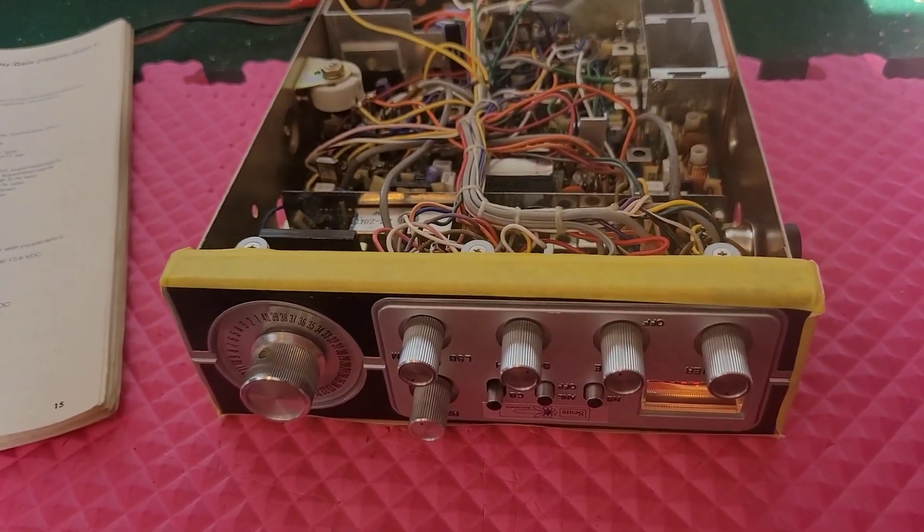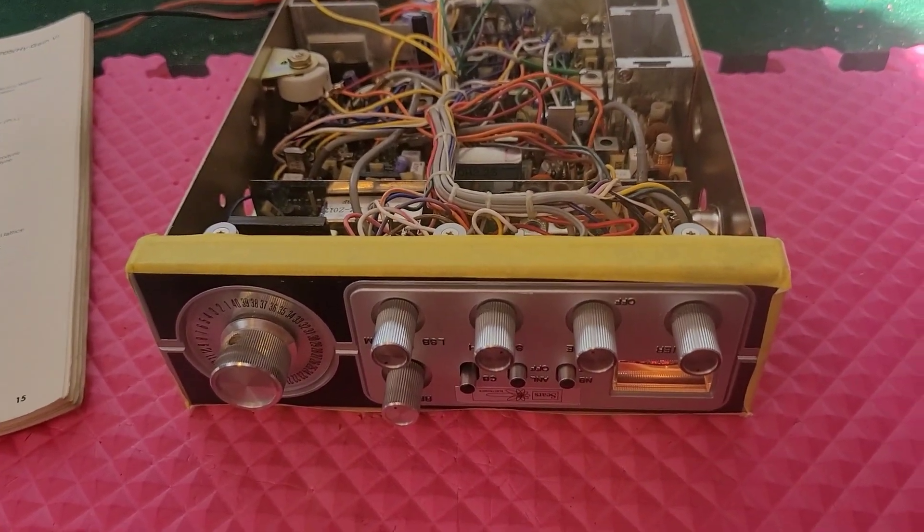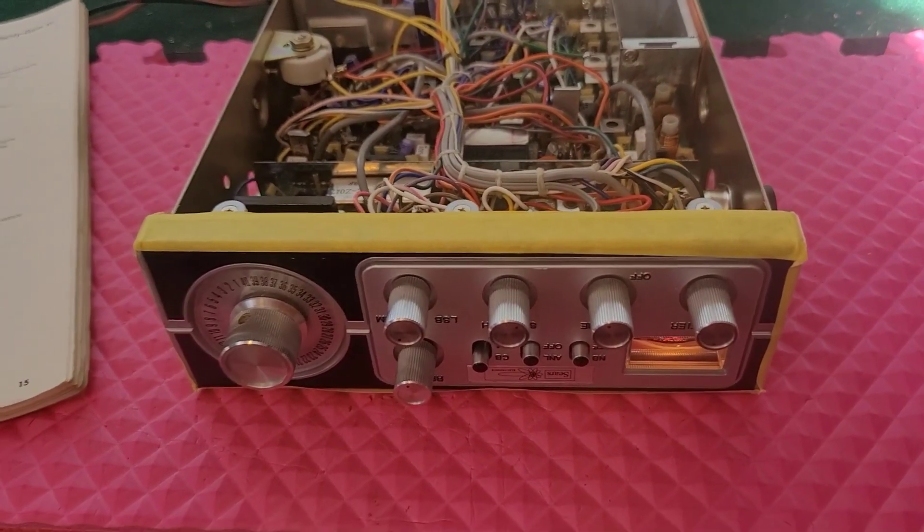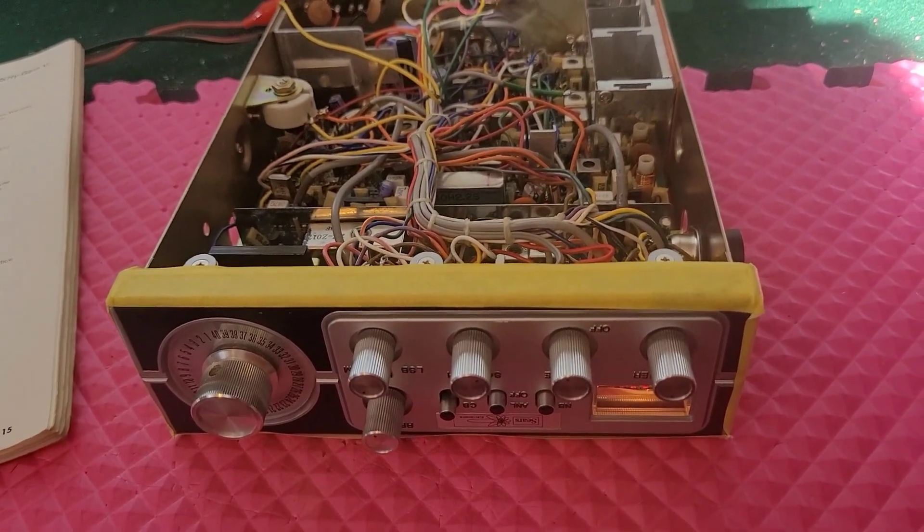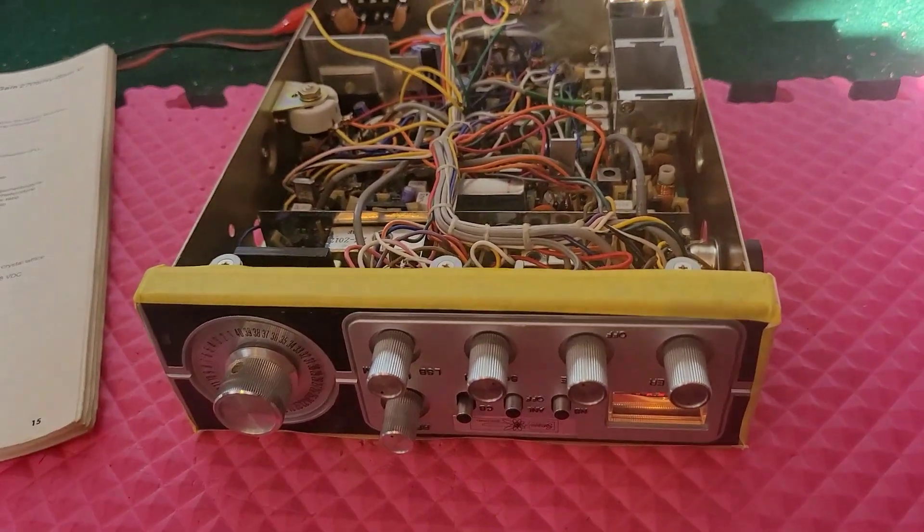Alright guys, on the bench we have the CS Simpson model 60006, otherwise known as the High Gain 5. I'm about to do a recap and alignment on this radio, but first I wanted to take a SINAD measurement of it.